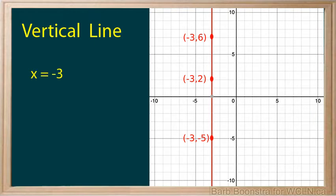You can see that x always has the value of negative 3, and y can take any value. The equation of the vertical line is x equals negative 3. Let's find the slope of this line.